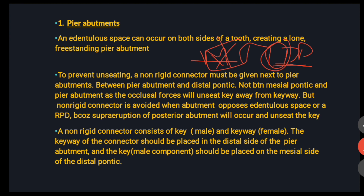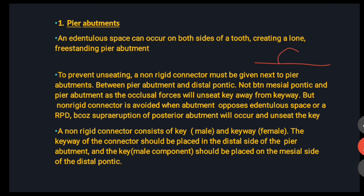Why not on the mesial side? Because on the mesial side, due to occlusal forces, it will unseat the key away from the keyway. Also, if an edentulous space is opposite to the pier abutment, or there is an RPD on that side, there are chances of supra-eruption of your posterior abutment, so in those cases a non-rigid connector is avoided.